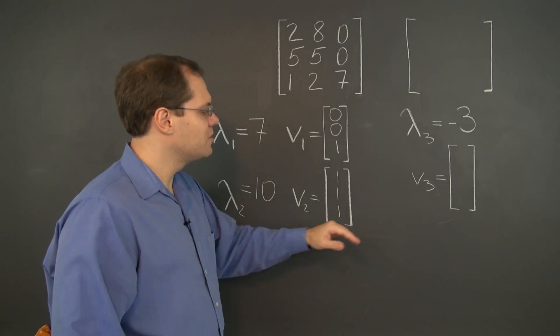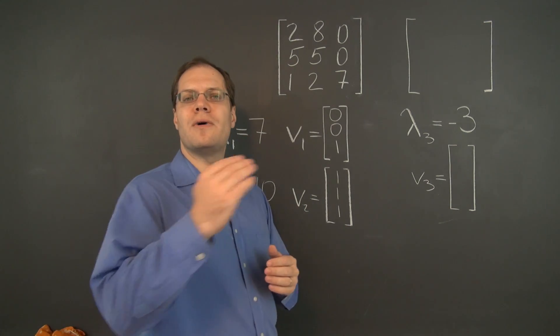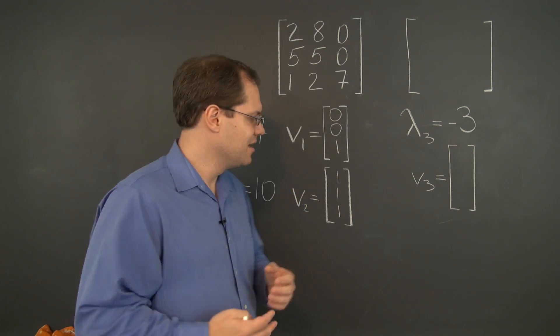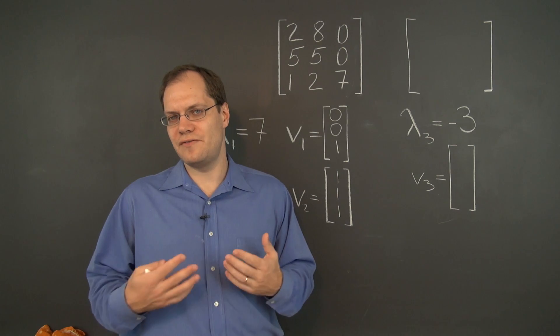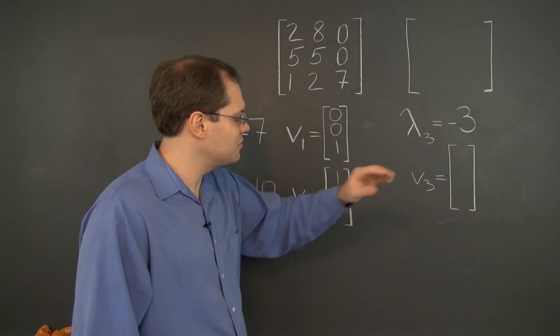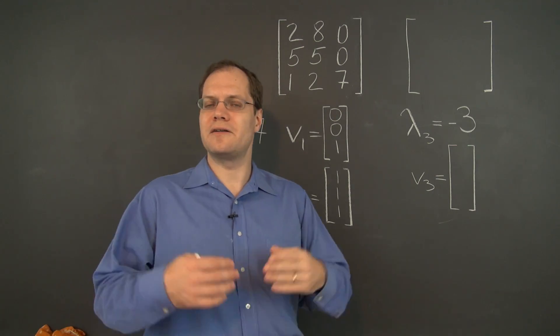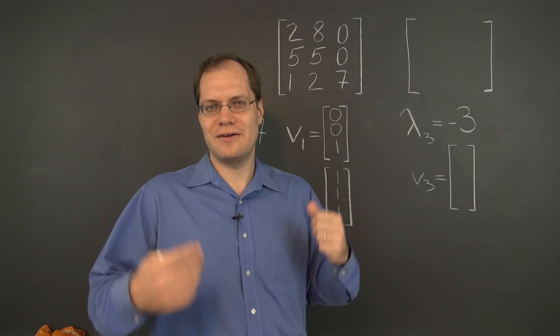So we kind of knew that minus 3 is an eigenvalue from other considerations, rather sophisticated considerations, and a variety of different features that we took advantage of. So I still think it's magical to subtract minus 3 from the diagonal and realize that, lo and behold, we have a singular matrix.